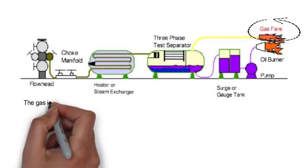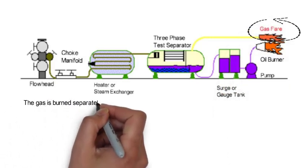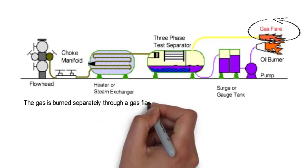The gas is burned separately through a gas flare located on the burner booms.